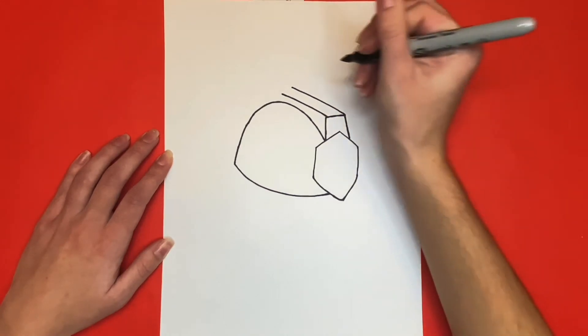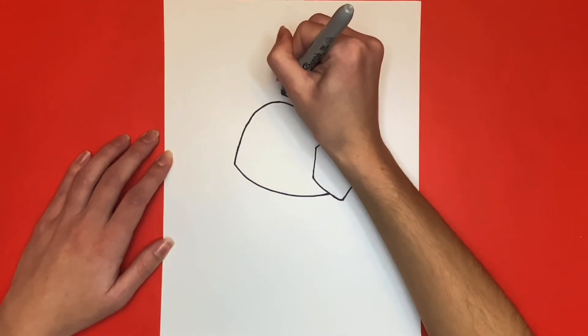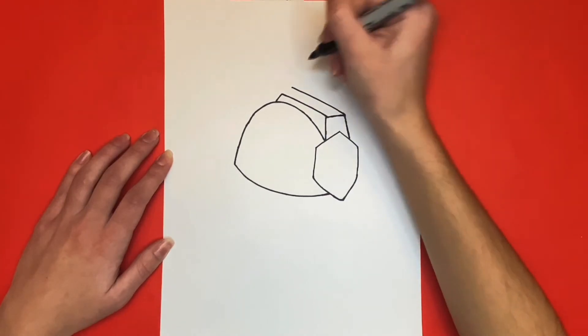Awesome! Now we will draw a small line connecting the bottom line to the hat and then another small line connecting the two lines that we drew.